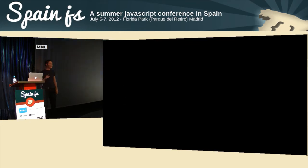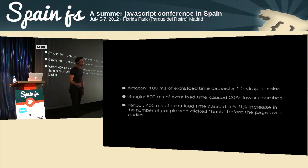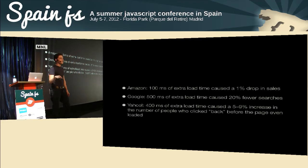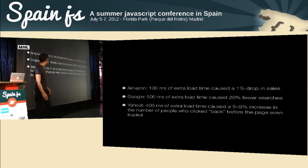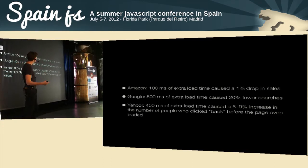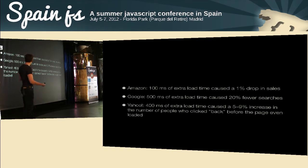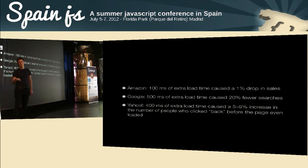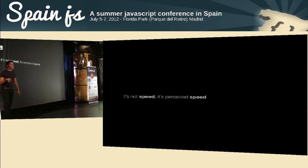Usually, making things faster makes more money. Amazon, Google, and Yahoo have revenues directly tied to the speed of their web applications. For Amazon, 100 milliseconds of extra load time caused a one percent drop in sales — and at Amazon's scale, that's huge. Google has actually added speed to their PageRank algorithm. These three companies take speed very seriously.